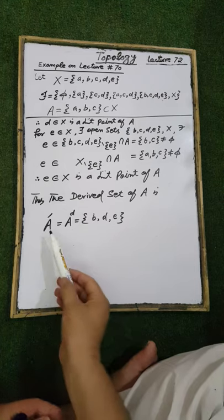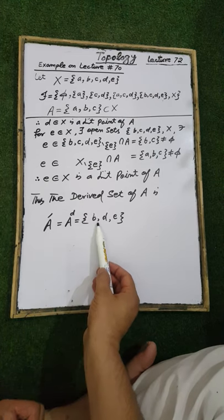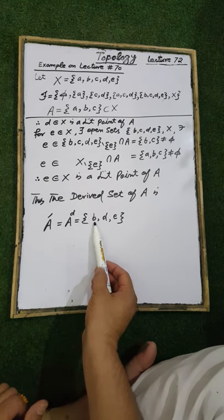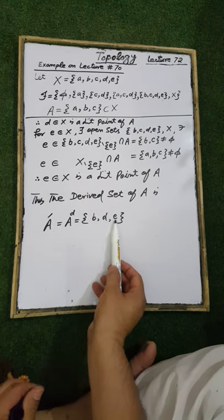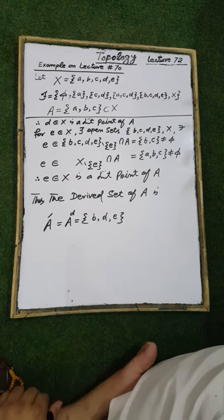Hence, the derived set of the set A is the set containing the elements b, d, and e.